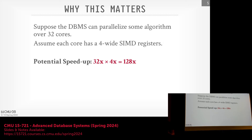Why does this matter? The same way that scaling out across multiple threads, processes, or nodes gives additional performance improvement by not being restricted to what a single thread on a single core can do, SIMD can give even bigger speedup because it also runs in parallel across multiple cores.